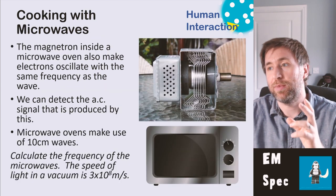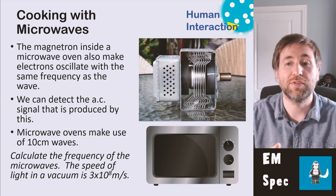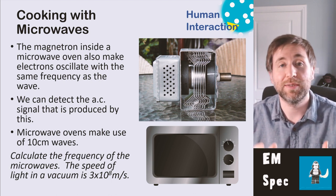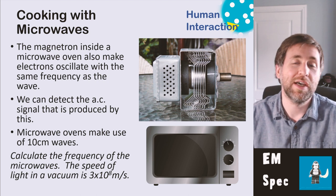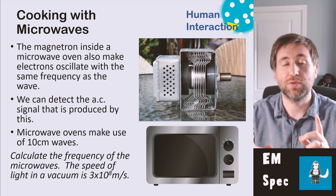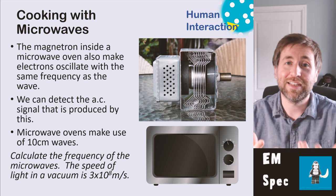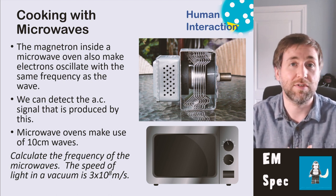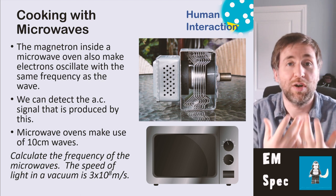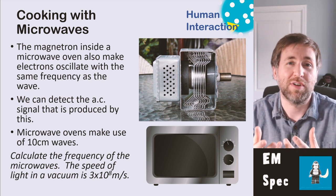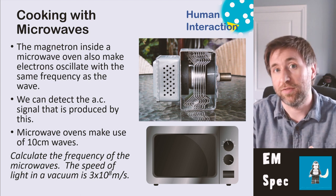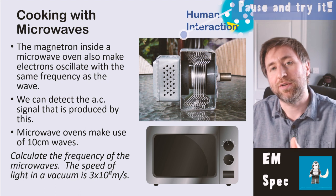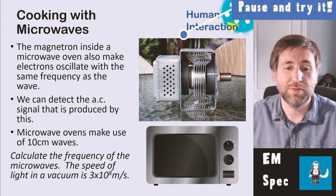Finally, let's talk about cooking with microwaves. This is a picture of a magnetron inside a microwave oven — a magnetron is something that produces microwaves, by having an alternating potential difference causing electrons to oscillate at exactly the right frequency to produce 10 cm microwaves. Ten centimetre microwaves are just the right wavelength to cause water to vibrate, so the water gets hot and that cooks the food. There's a calculation question: calculate the frequency of microwaves given the speed of light in a vacuum is 3×10⁸.